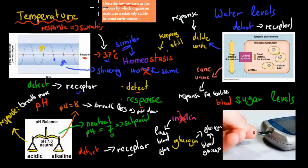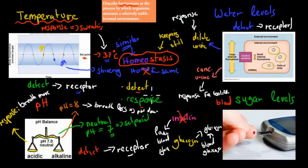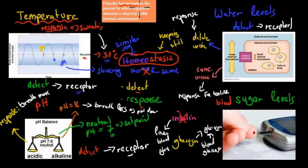Homeostasis is described as a process by which organisms maintain a relatively stable internal environment. It's all about keeping a similar level for different body processes — such as keeping temperature, pH, body water levels, and blood sugar levels the same. There are two things we do to make that happen: detect, which is detecting the change, and respond, which is responding to that change. Specific response examples include: if temperature is too low, we shiver; if it's too high, we sweat. But it's all about keeping that constant internal environment — that's how homeostasis works.